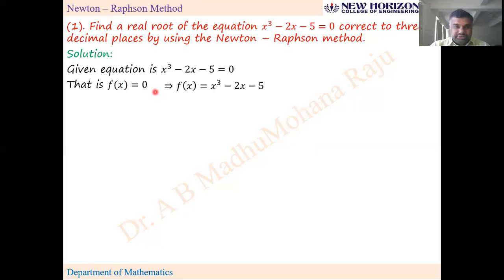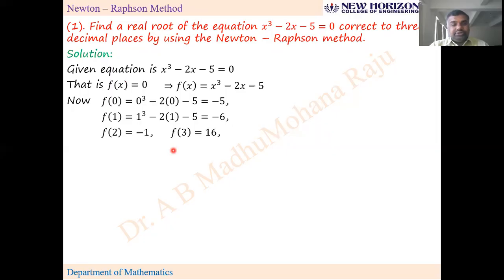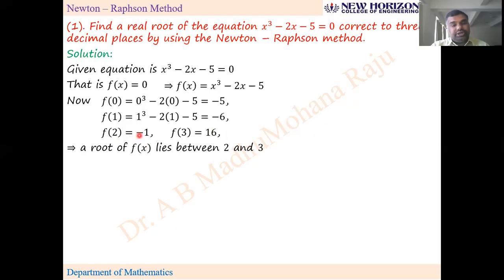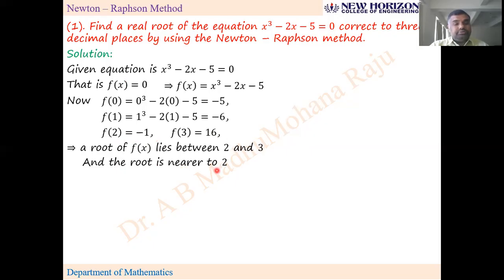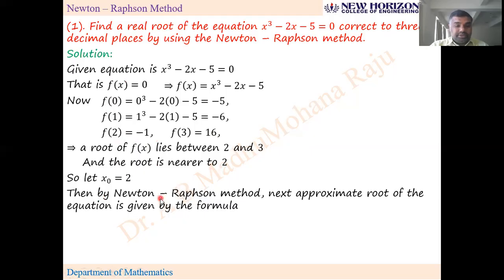List f(x) and by trial and error method guess where it is positive and where it is negative. At x=2 it is negative, at x=3 it is positive, so the root lies between 2 and 3. At x=3 it is 16, at x=2 it is -1, so the root lies nearer to 2. We'll take x₀ = 2.